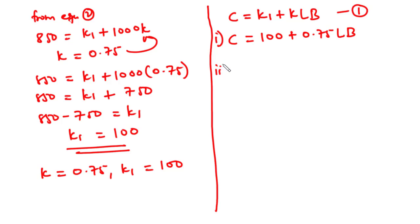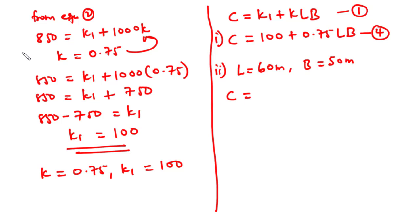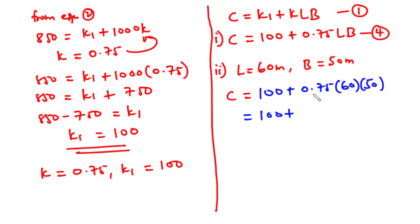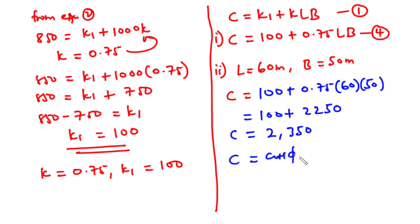For part ii, we are asked to calculate the cost of weeding a plot of length 60 meters and breadth 50 meters. Substituting into the equation: C equals 100 plus 0.75 times 60 times 50. Now 0.75 times 60 times 50 is 2250, and 2250 plus 100 is 2350. So the cost of weeding a plot of land of length 60 meters and breadth 50 meters is 2350 Ghana cedis.